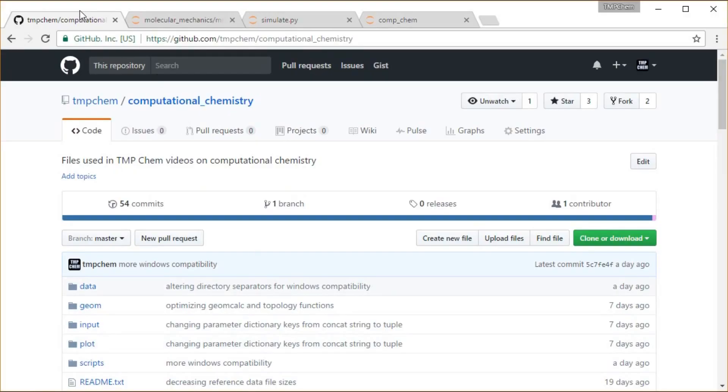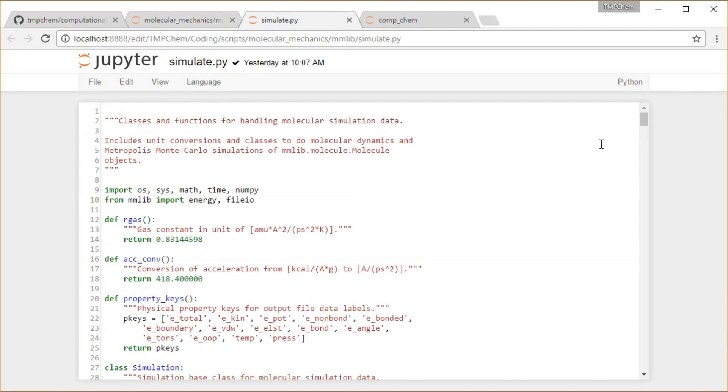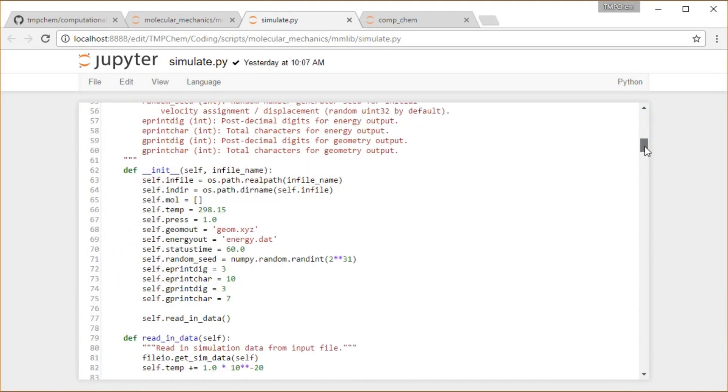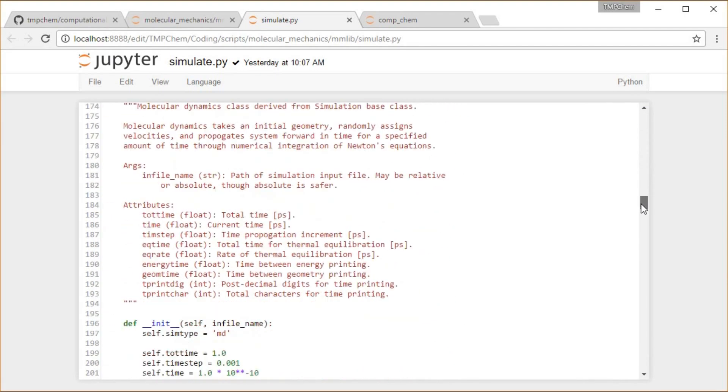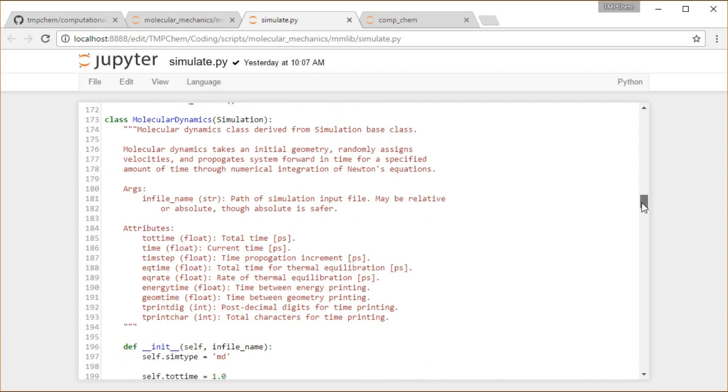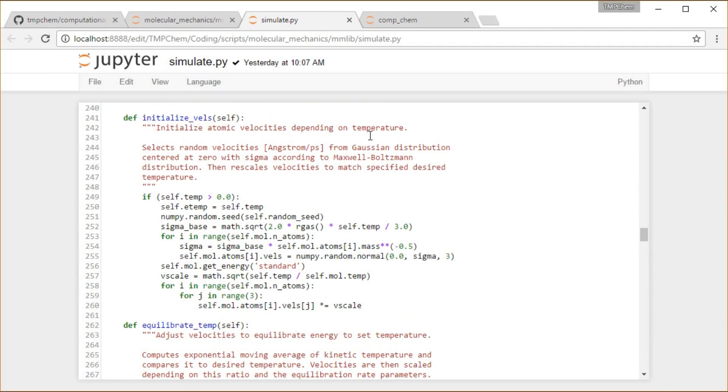For example, in the program we'll be using shortly in a few videos from my Computational Chemistry GitHub repository, down in the Scripts Molecular Mechanics MMLib directory, you'll find the simulate.py module. And in there, we'll find a simulation base class, and then I have a derived class down here, molecular dynamics, and a function in here where we're going to initialize the velocities depending on temperature. Therefore, each individual velocity starts out by saying...